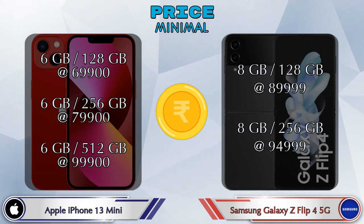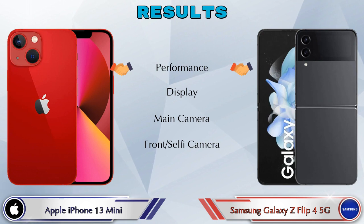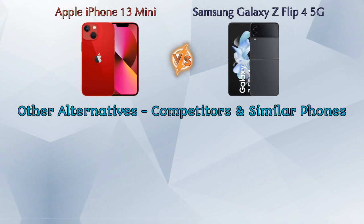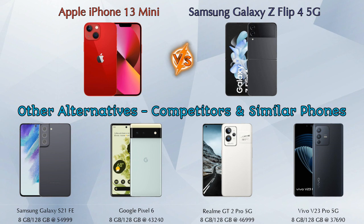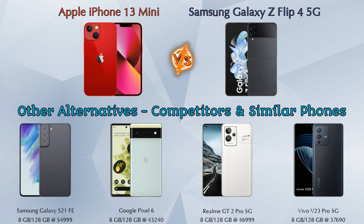Finally, talking about results: in performance, display, main camera, and front selfie camera, both phones are the same. Now for other competitors at the same price: first is Samsung Galaxy S21 FE 5G, second is Google Pixel 6 5G, third is Realme GT2 Pro 5G, and the last is Vivo V23 Pro 5G. Details about all these competitor phones are available in the description.